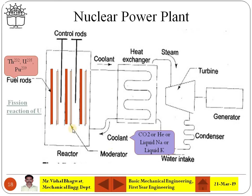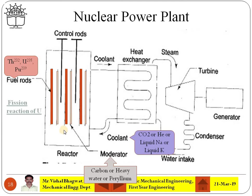The moderator can be carbon, heavy water, or beryllium. The function of the moderator is to slow down the speed of neutrons that are striking the new atoms or the nucleus.